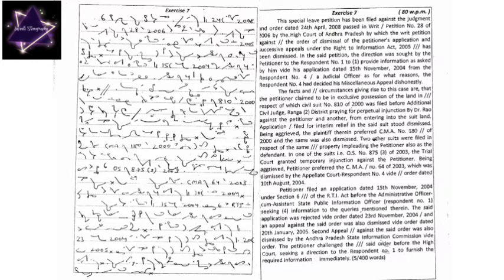Two other suits were filed in respect of the same property, impleading the petitioner also as the defendant. In one of the suits, that is OS number 875 of 2003, the trial court granted temporary injunction against the petitioner. Being aggrieved...